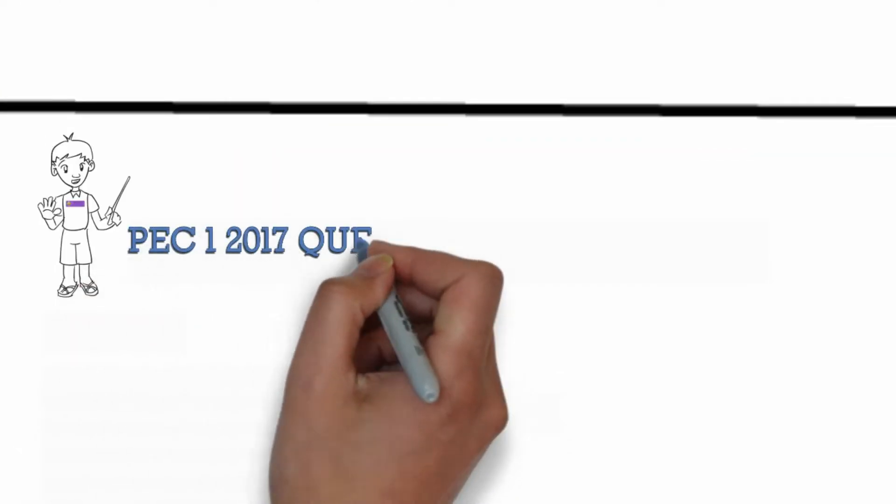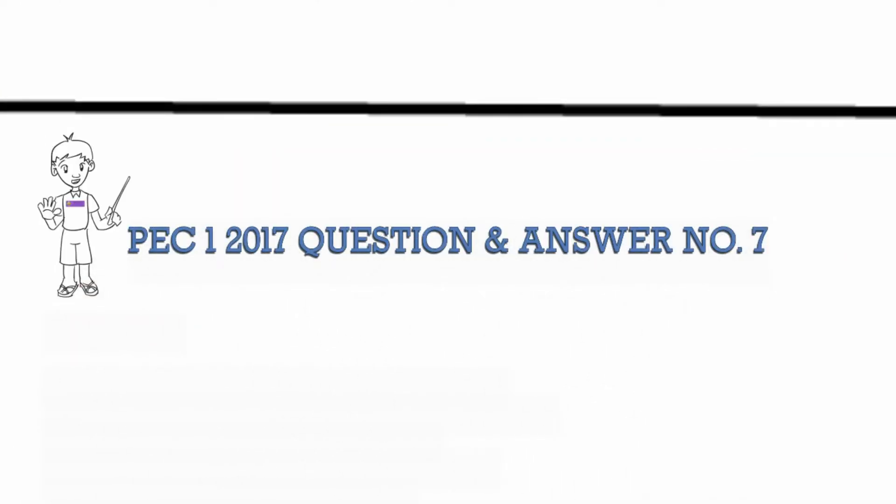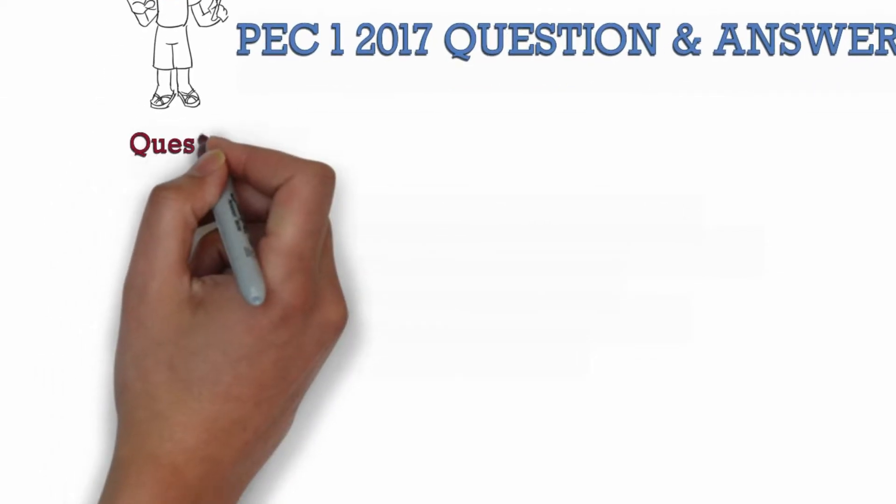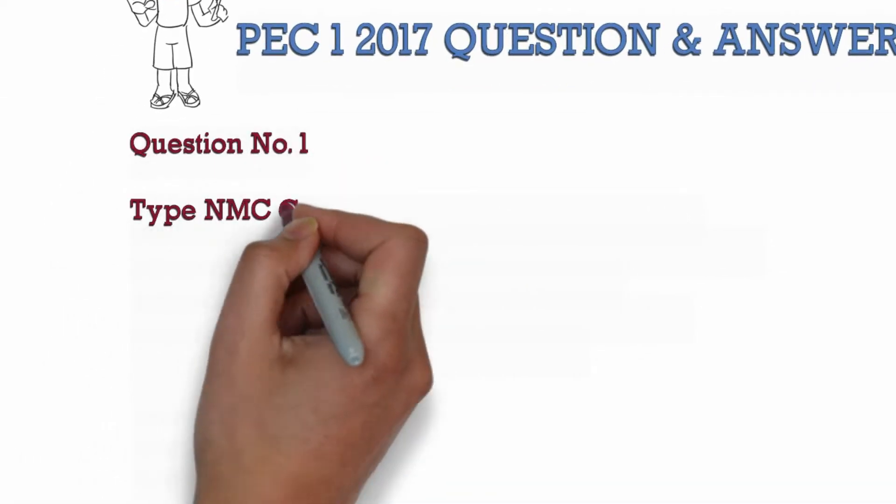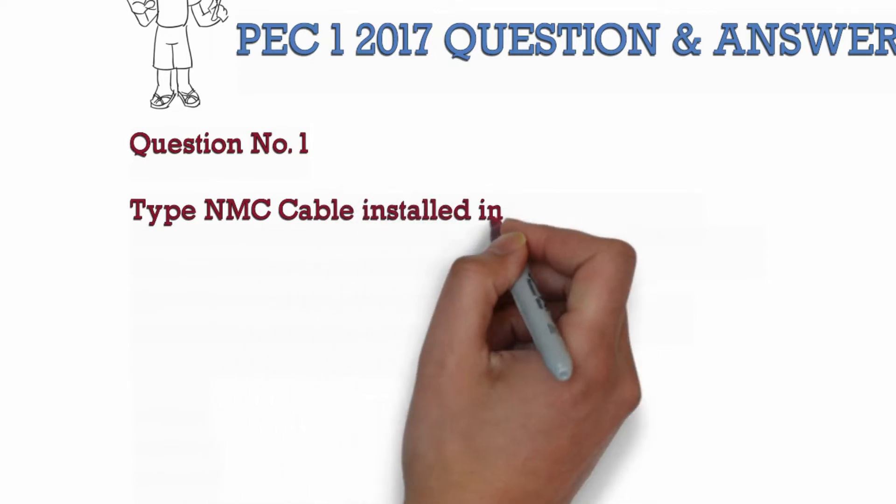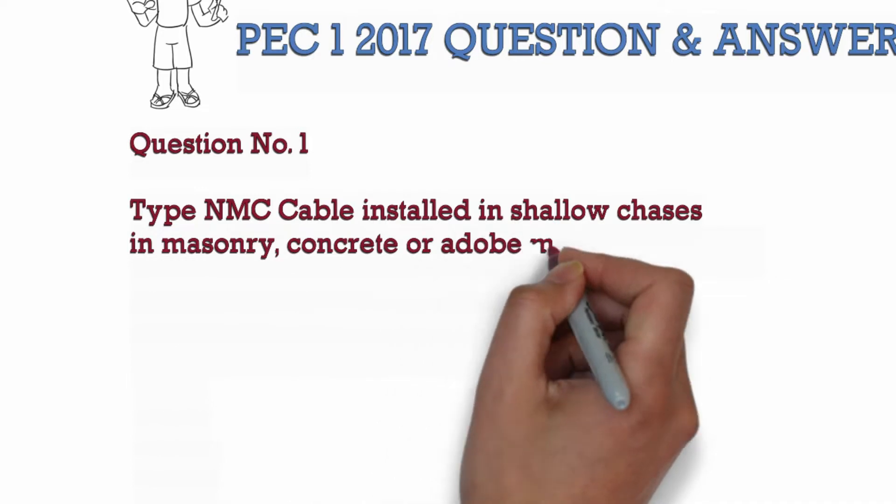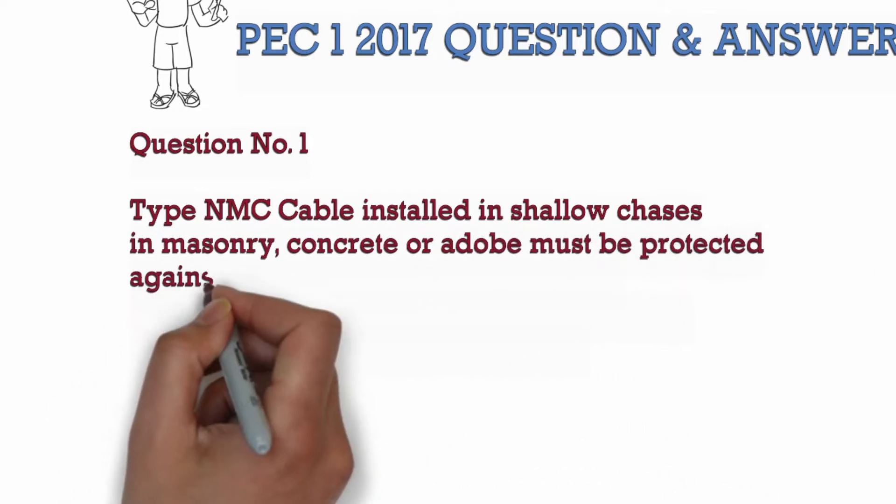Philippine Electrical Code Part 1 2017 Question and Answer Number 7. Question Number 1: Type NMC cable installed in shallow chases in masonry, concrete, or adobe must be protected against nails or screws by a steel plate not less than blank millimeter thick and covered with plaster, adobe, or similar finish.